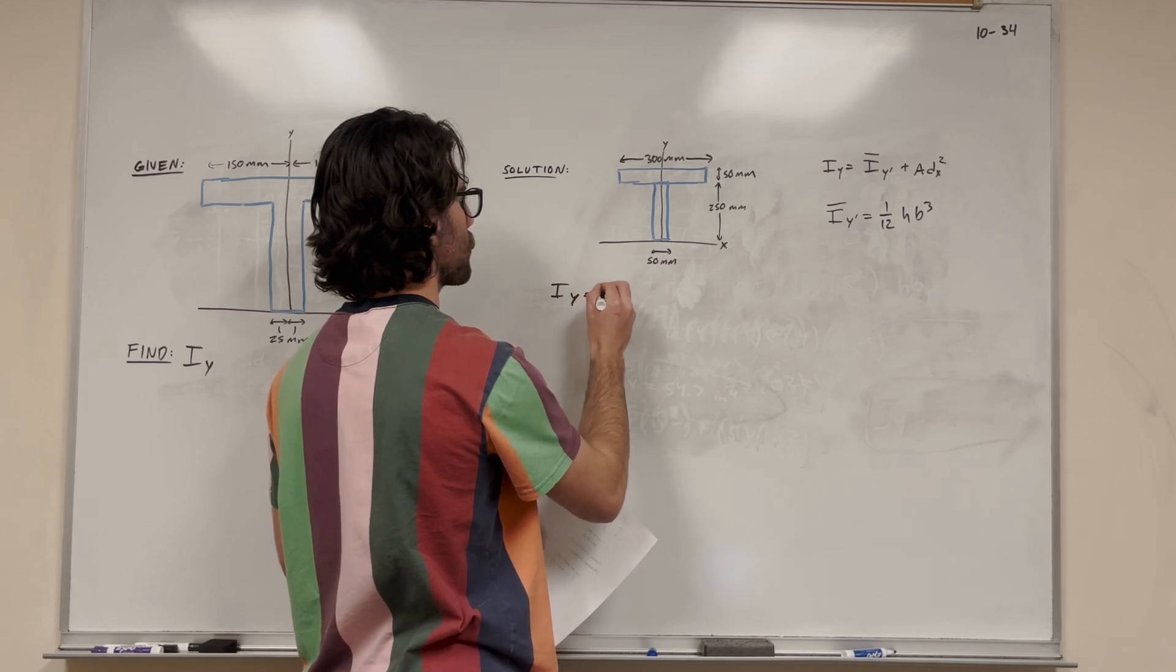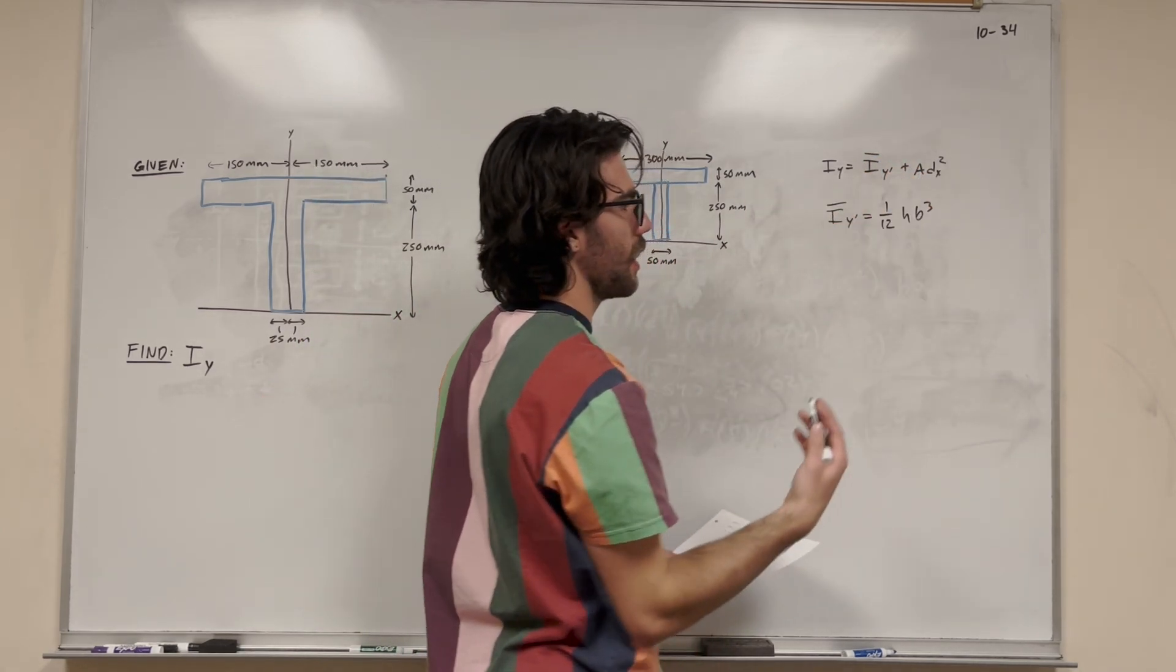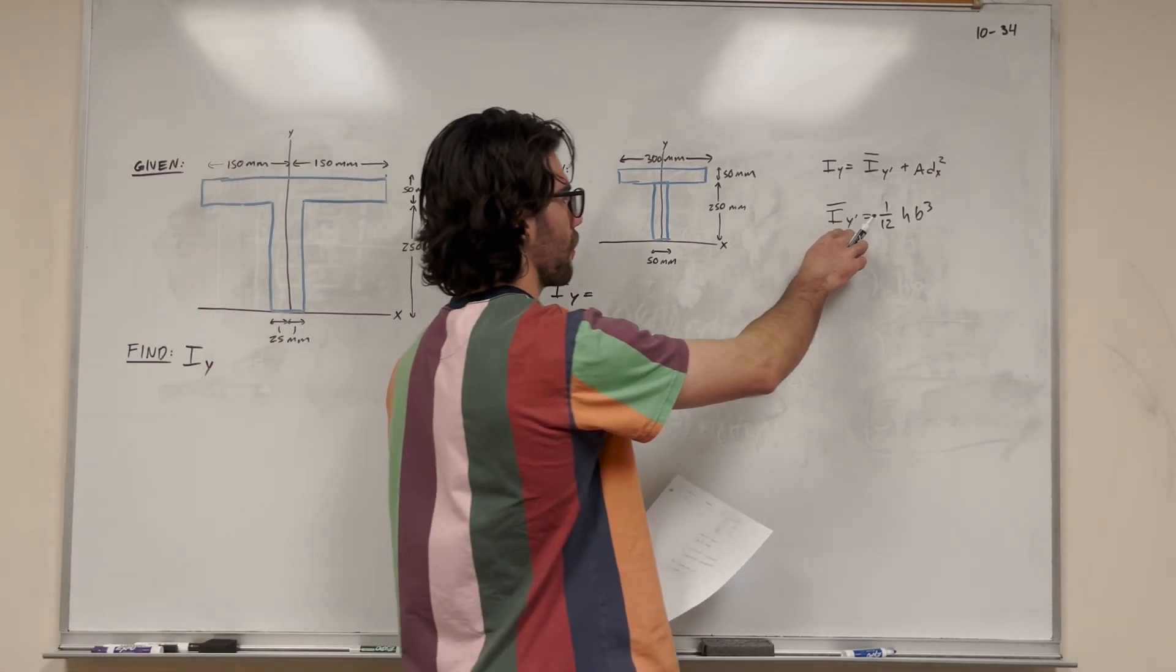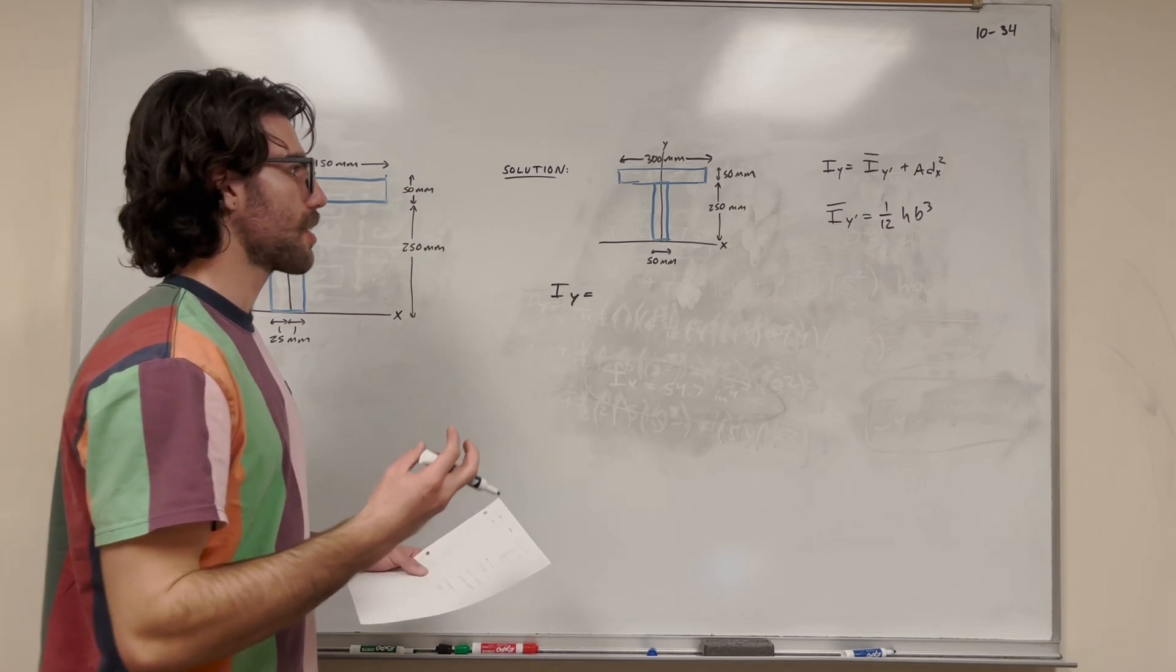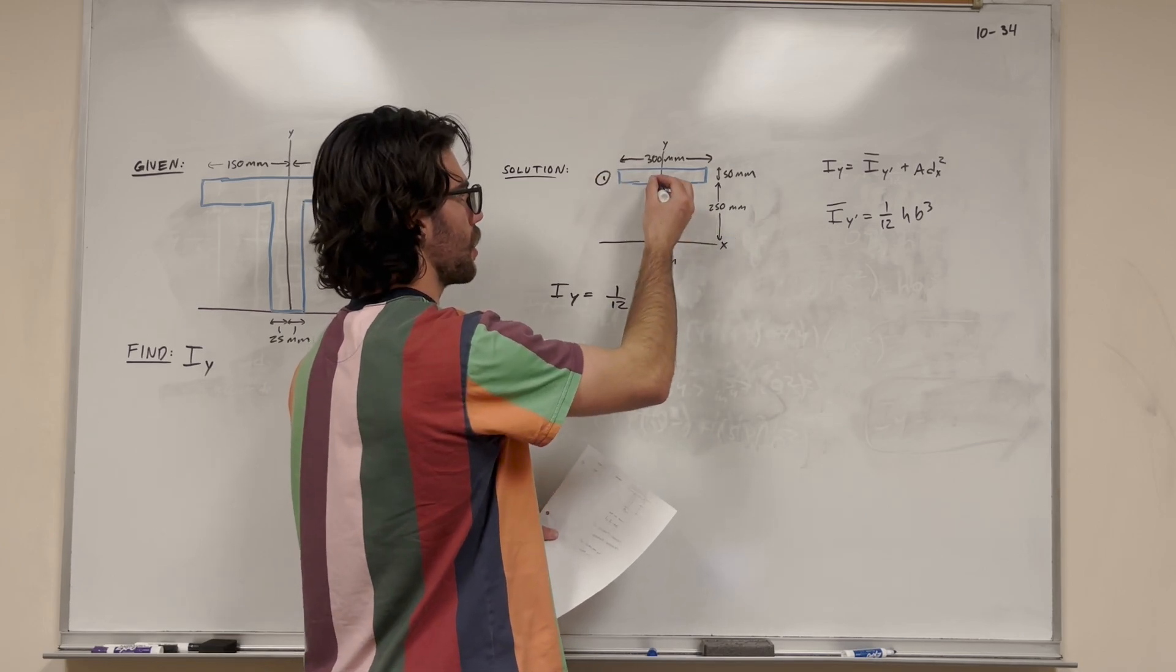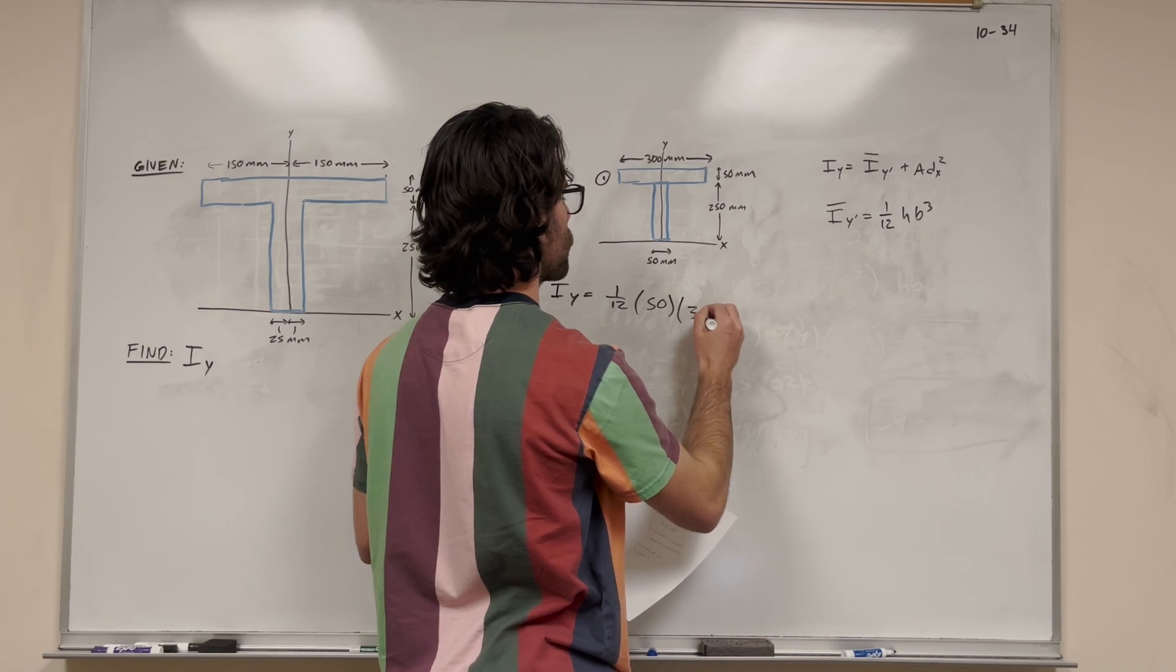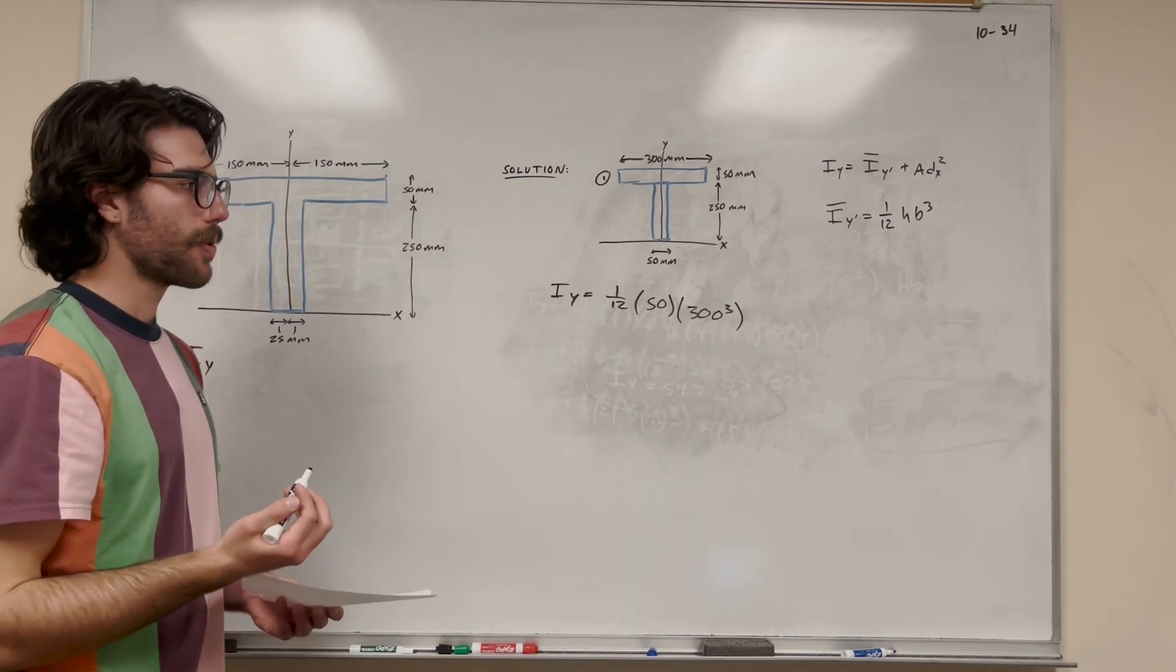So Iy is equal to—we get I bar y prime. This is basically something you find in the back of the book. It's specific to each shape. This is the equation for a rectangle moment of inertia, I found that in the back of the book. We're going to do one twelfth times—we're starting with this rectangle, number one. We're going to do the height of the rectangle, 50 millimeters, times the base of the rectangle, 300 millimeters cubed. That's just how the equation works.